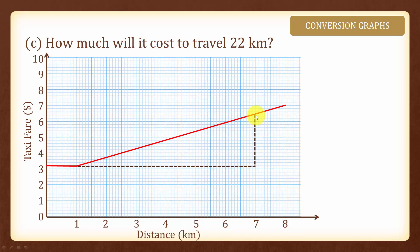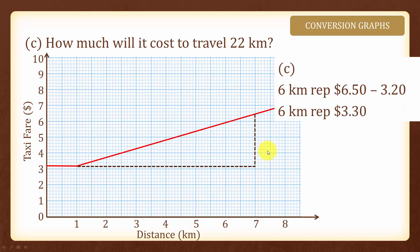Here we use a bigger triangle to find the rates so that it will be slightly more accurate. In this case, 6 kilometers here represents $6.50 minus $3.20. So 6 kilometers represents $3.30. In other words, it costs $3.30 to travel 6 kilometers here.